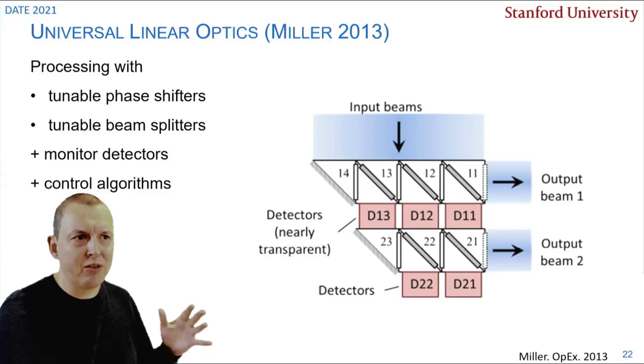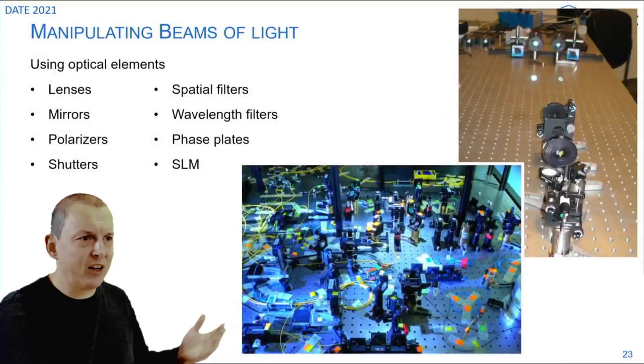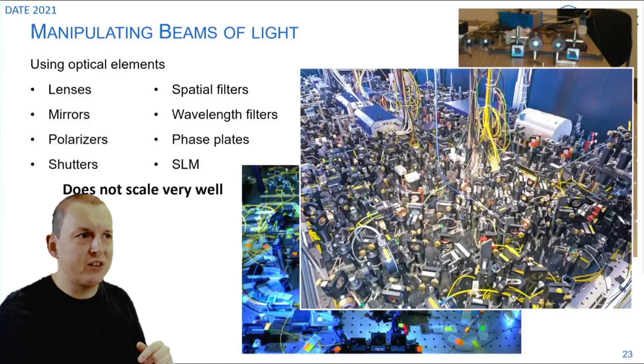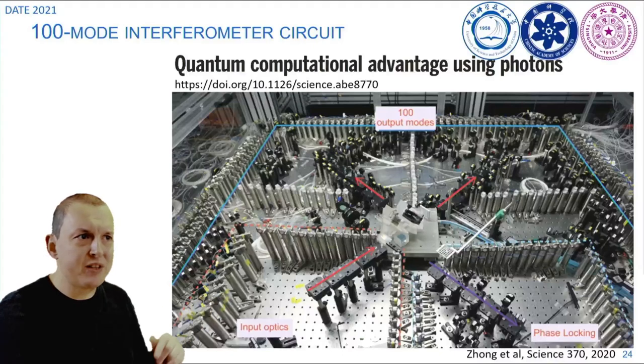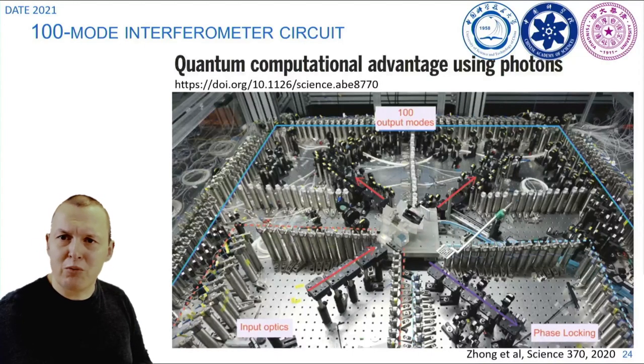But still if you have a system built out of discrete components you have to be able to scale up something like this to a much larger system which becomes quite complicated. Just an example from very recently published in Science is this 100 mode interferometer circuit that has been constructed to demonstrate quantum supremacy.